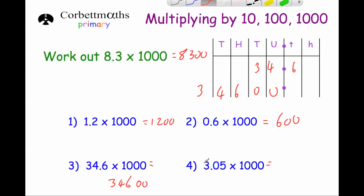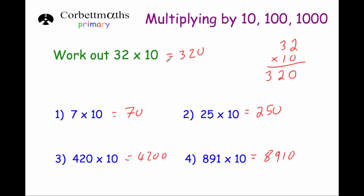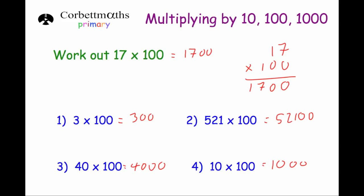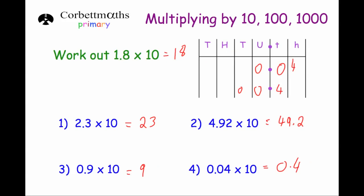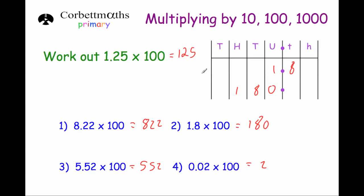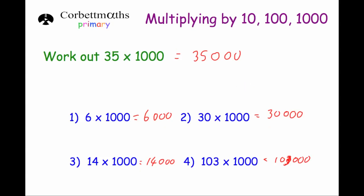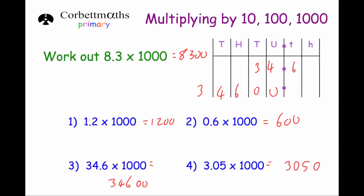Our last question is to multiply 3.05 by 1000. The 3 moves from units into thousands, the 0 moves into hundreds, and the 5 moves into tens, giving the answer 3,050. So to summarize: multiply whole numbers by 10, 100, or 1000 — just add the appropriate number of zeros. Multiply decimal numbers by 10 — move digits one column left. By 100 — move two columns left. By 1000 — move all digits three columns to the left.